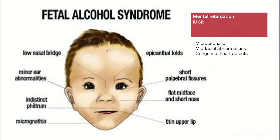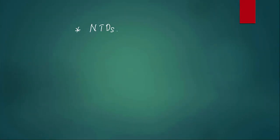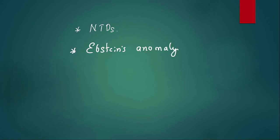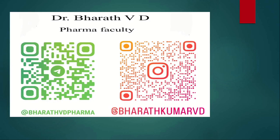This is fetal alcohol syndrome, visible in the image shown. Two questions to answer: which anti-epileptic drug causes neural tube defect, and which anti-psychiatric drug causes an abstinence anomaly? Hope you enjoyed the fantastic five MCQs session. If you find this content useful, press like, subscribe to the channel, and share it with your friends.